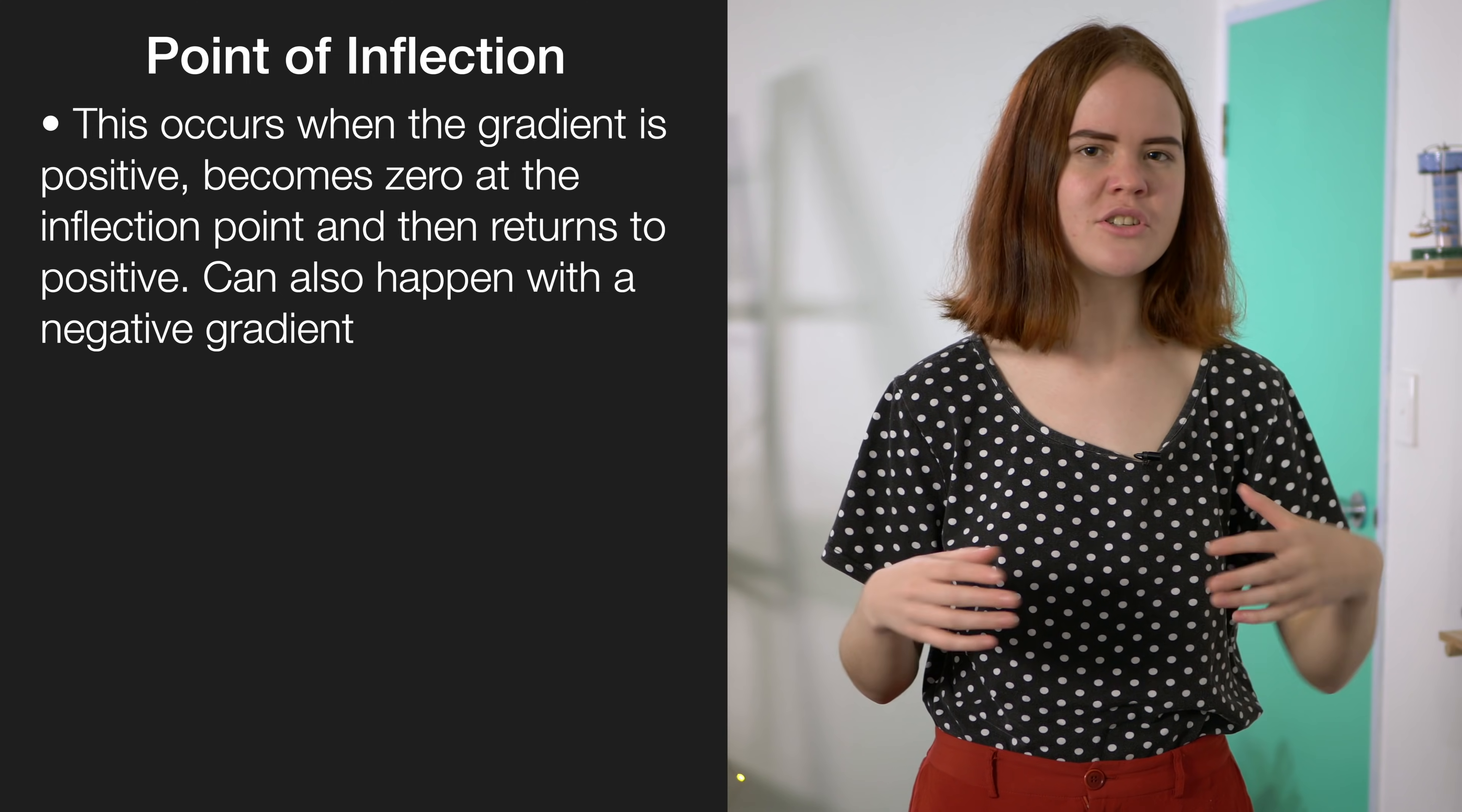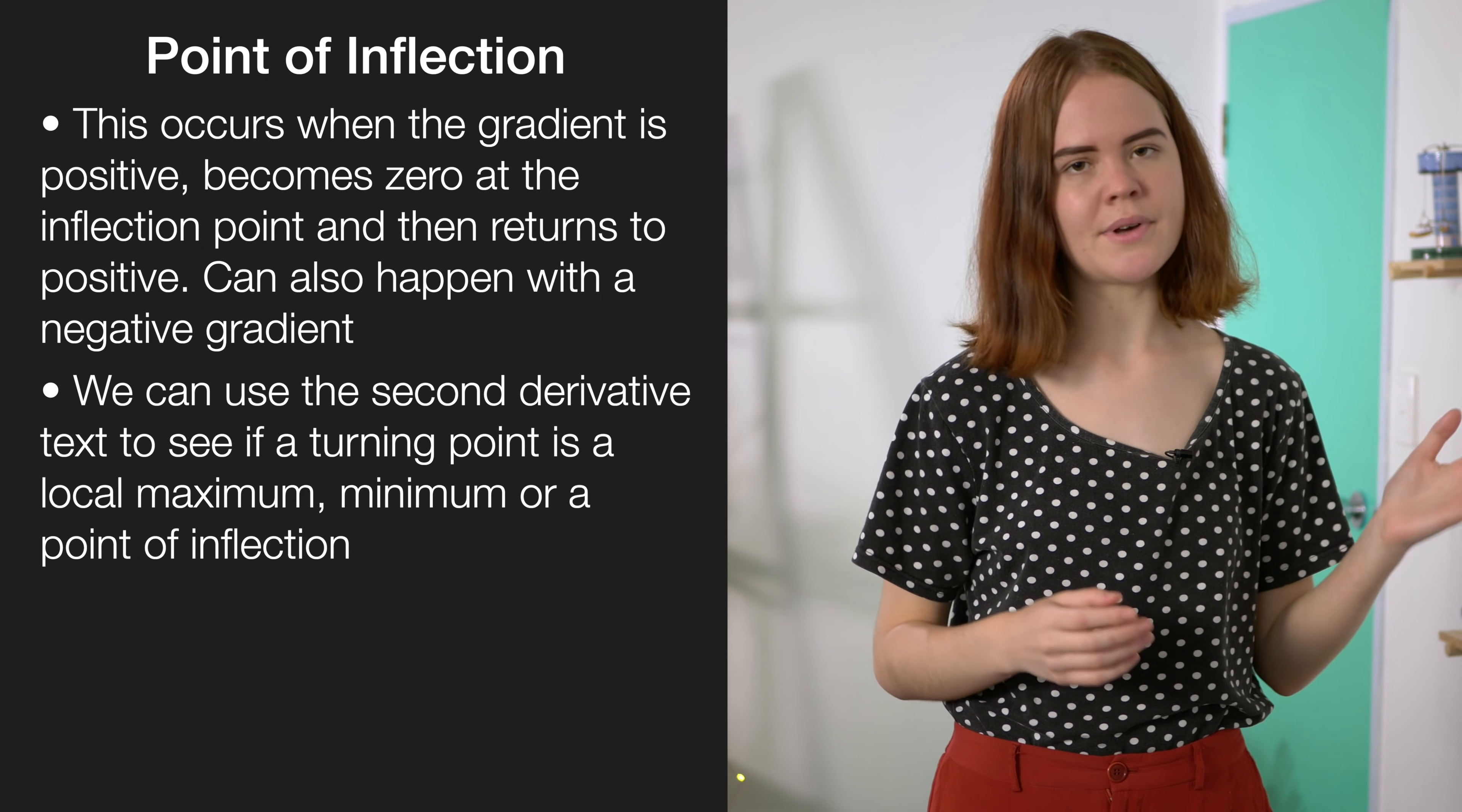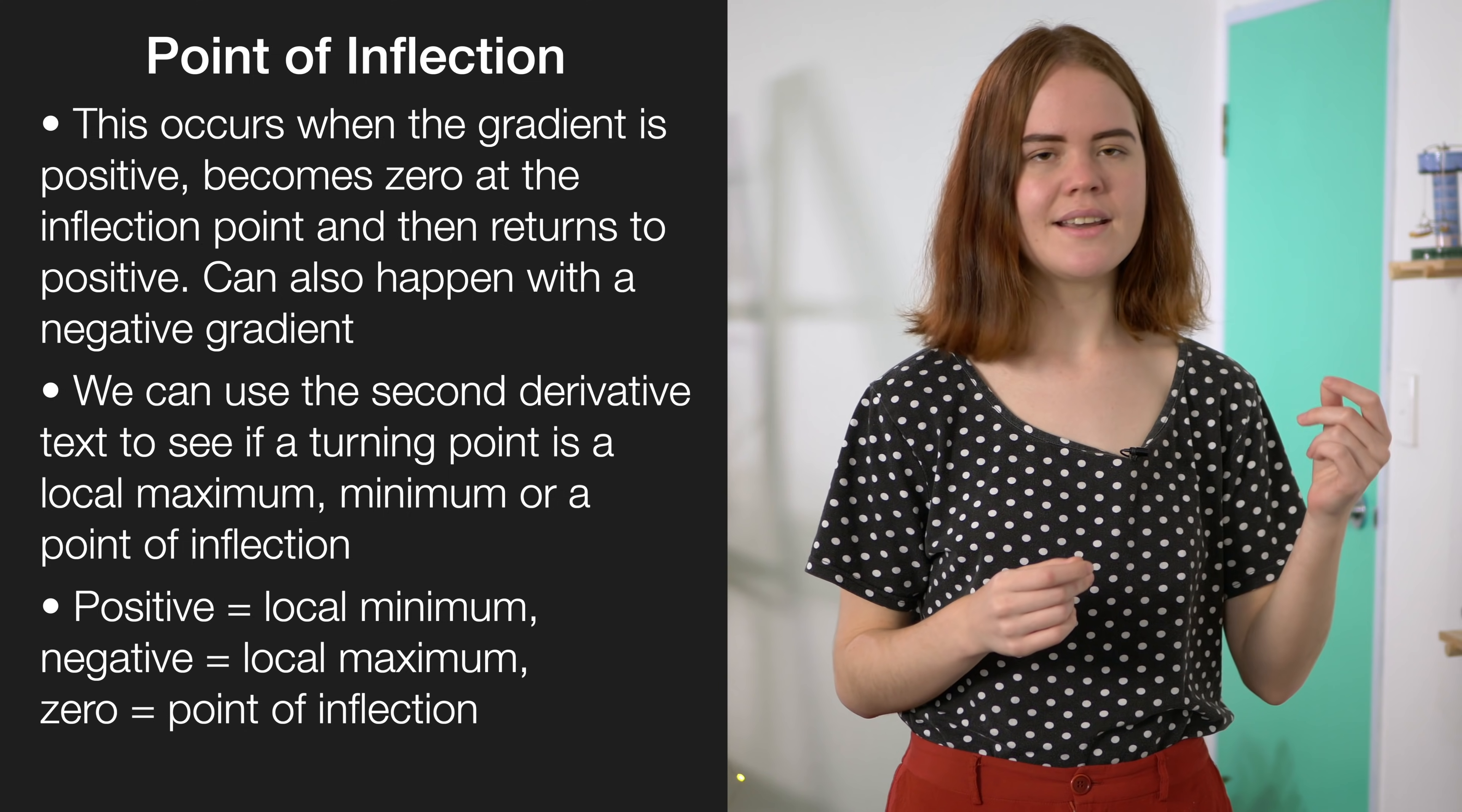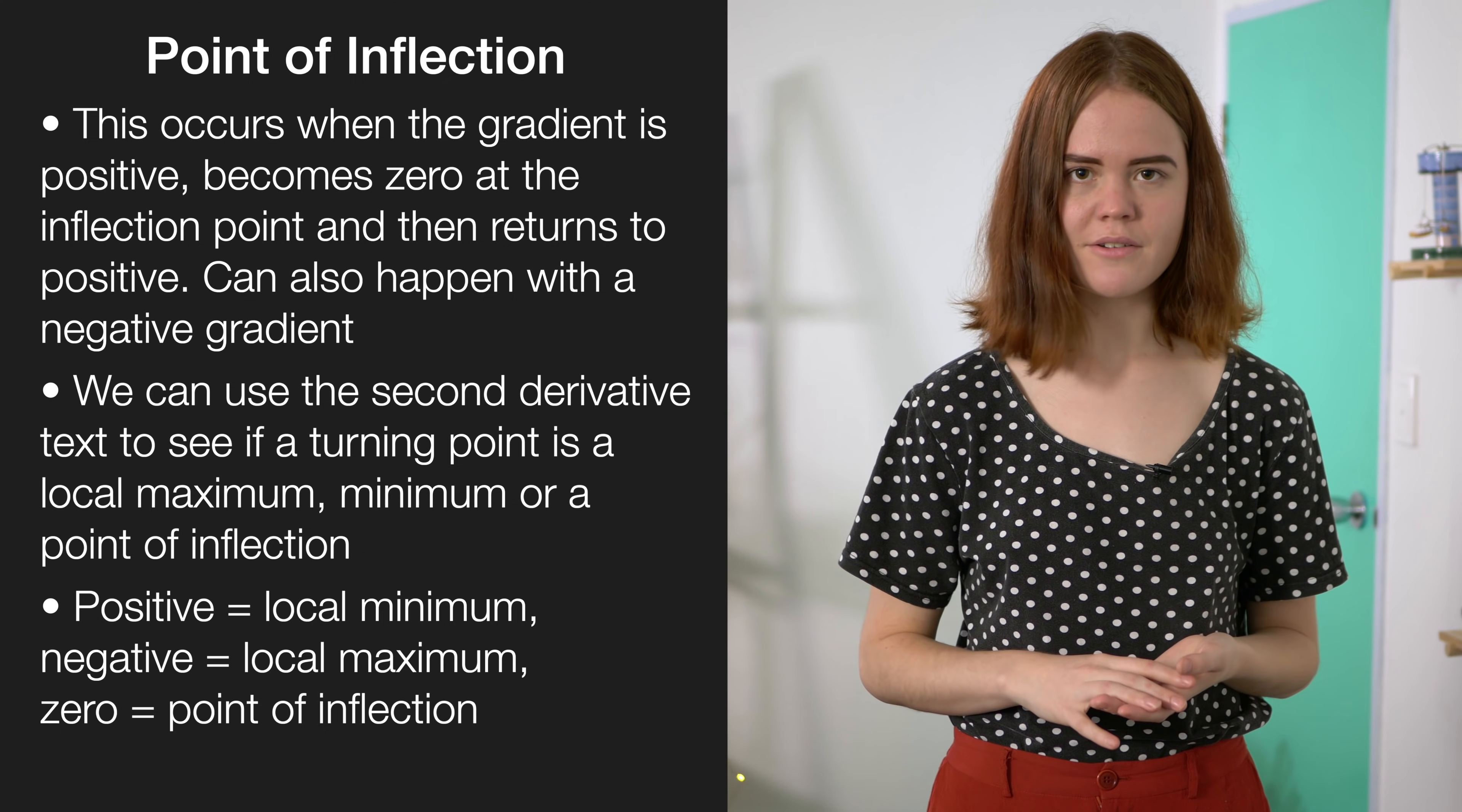So if a question asks you to show whether something's a maximum or a minimum, what do we do then? Well this is when we use the second derivative test. You need to go back to your gradient function, re-differentiate it, and plug your x value in. If your answer comes out positive, then your point is a minimum. And if it comes out negative, then it's a maximum. Now this is a bit counter-intuitive, so I like to remember it as a positive face would be a smiley face, and the turning point on that would be a minimum. The other option, of course, is if it comes out to zero, then it's a point of inflection.